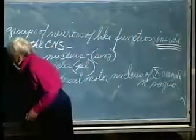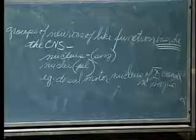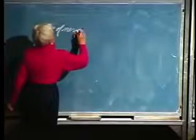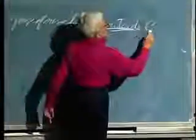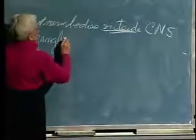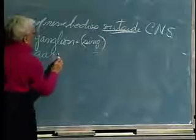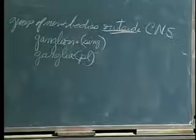A group of nerve cell bodies outside the CNS — what do we call them? Ganglia (plural), ganglion (singular). So with this very simplistic introduction we have some tools to begin to work with.